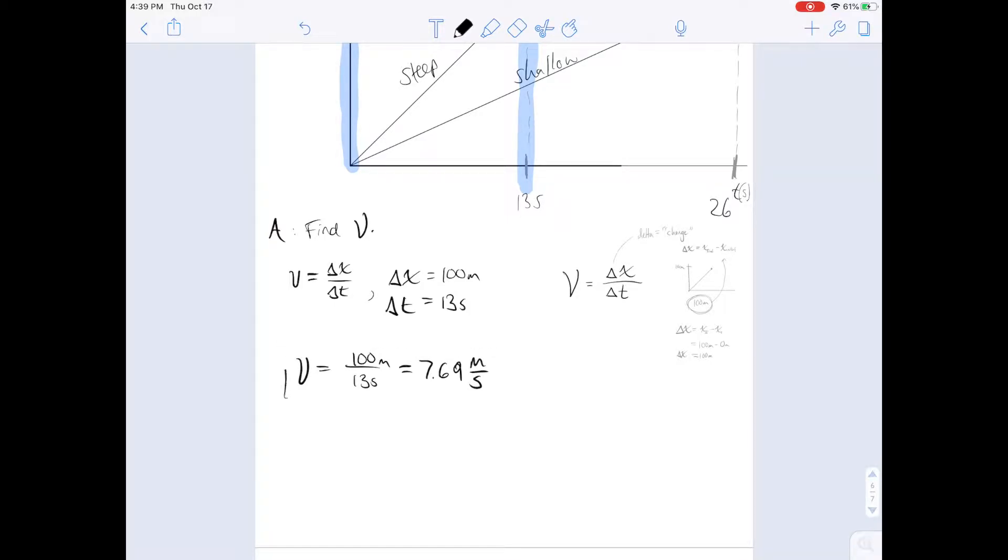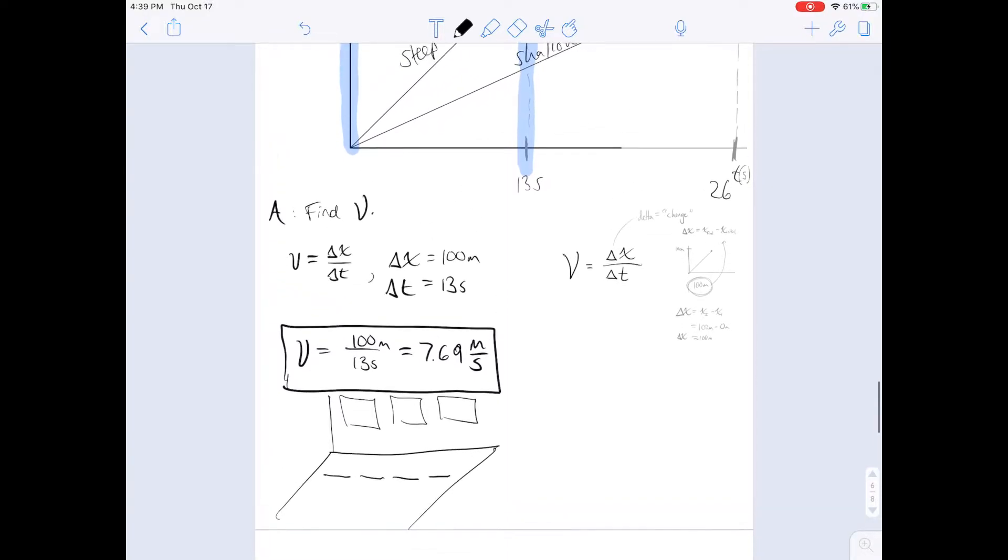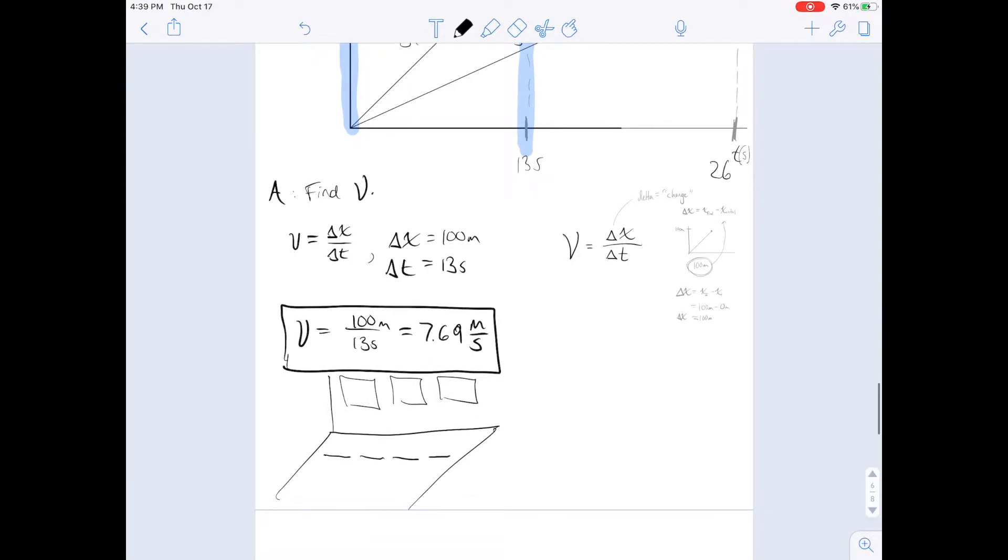And in our example, just to sort of visualize that, in class in the front of the room, we had the walls, the boards, and we had some meter sticks laying down. 7 meters in a second would correspond to basically crossing the entire classroom in one second. So pretty fast. But you can only get to that speed when you're really sprinting.